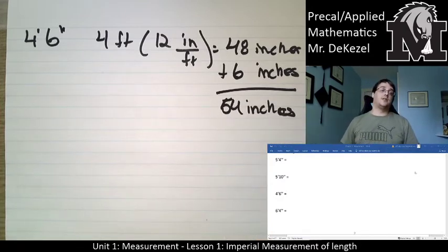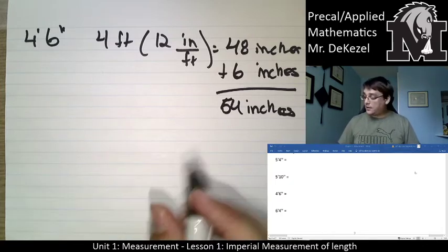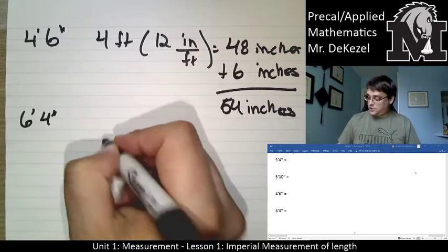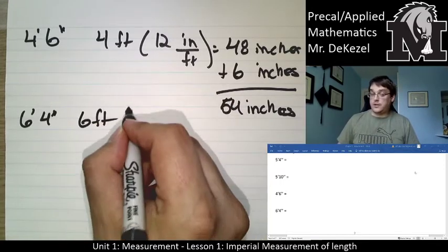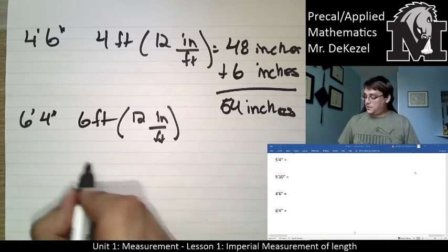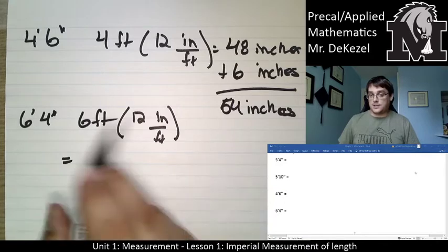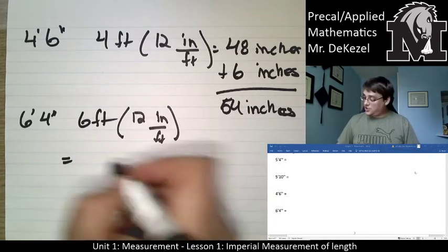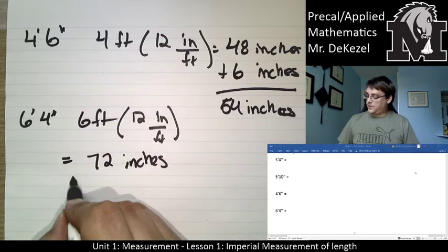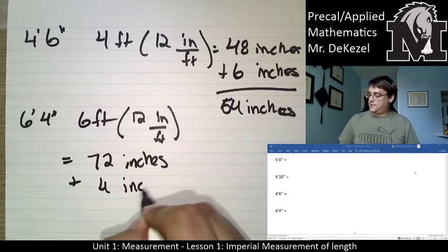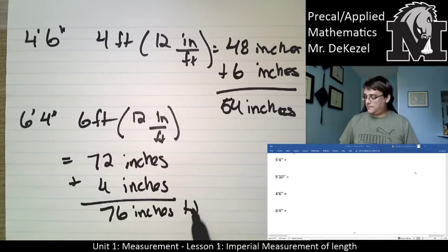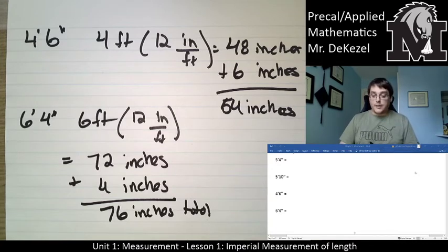If you got something different, definitely go back and try to find out why. Next one: six feet four inches. Six feet times 12 — that would be 72 inches. Then we add our four inches to give us 76 inches total. So that is how you combine units.